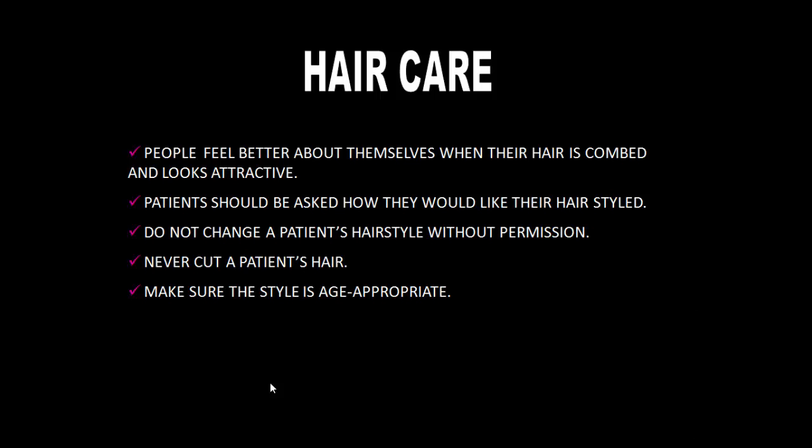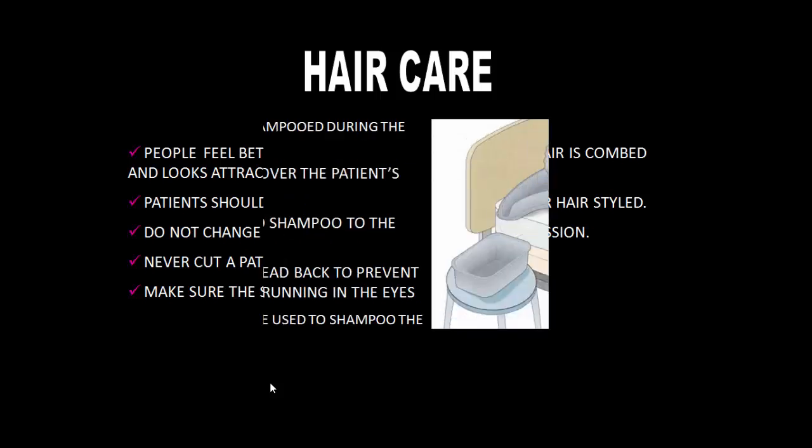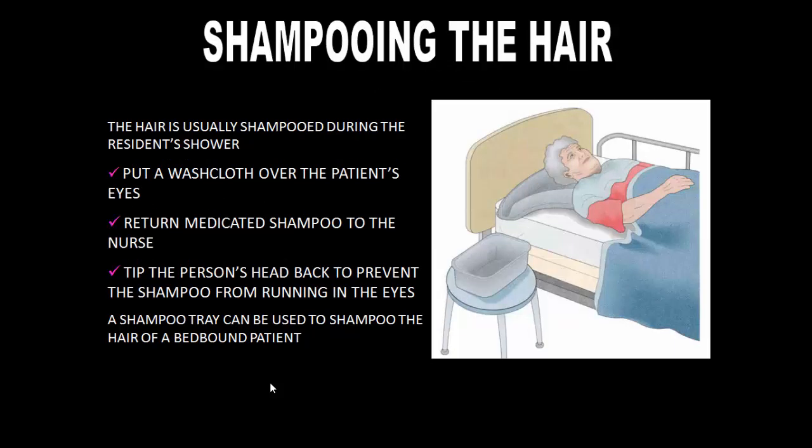Hair Care: People feel better about themselves when their hair is combed and looks attractive. Patients should be asked how they would like their hairstyle. Do not change a patient's hairstyle without permission, and never cut a patient's hair. Make sure the style is appropriate. Hair is usually shampooed during the resident's bath. Put a washcloth over the patient's eyes and tip the person's head back to prevent shampoo from running into the eyes. A shampoo tray can be used for shampooing the hair of bed-bound patients.